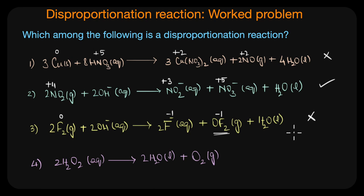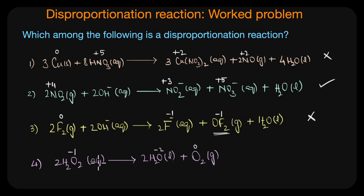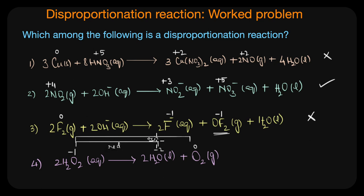The last reaction is H2O2 → 2H2O + O2. The oxidation state of oxygen in hydrogen peroxide is minus one — not minus two. In water it is minus two, and in O2 it is zero. So the oxidation state of oxygen changes from minus one to minus two (reduction) as well as from minus one to zero (oxidation). Therefore, hydrogen peroxide also undergoes a disproportionation reaction.